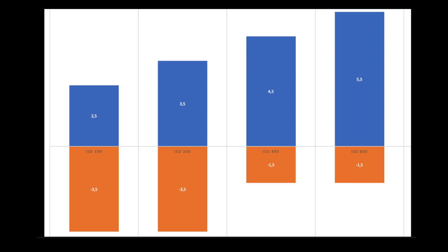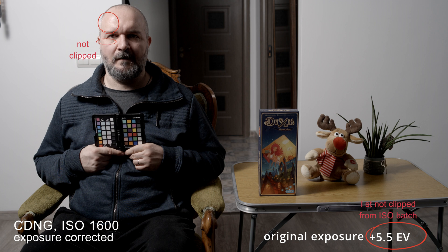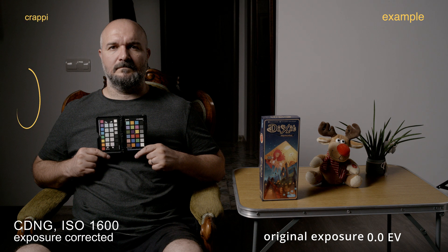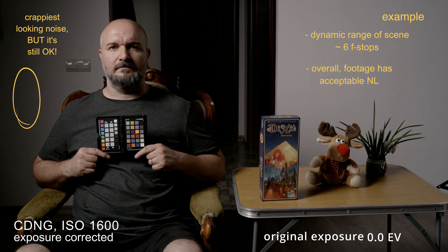Now I want to show you the footage that corresponds to the topmost and bottommost of these values. For example, for ISO 100, I'm going to show you the image for plus 2.5 EV and an image that contains an average amount of noise that corresponds to this value. For the overexposed images, what you're going to see is the first not-clipped image from that particular ISO batch. So for ISO 1600, this is plus 5.5 EV. If we look at the exposure value that's one f-stop higher than that image, we have clipped bits in that image. For the underexposed clips, you'll see the ones with an overall acceptable noise level, since because of the way I lit this scene, I have a big range between the face exposure and the darkest object.